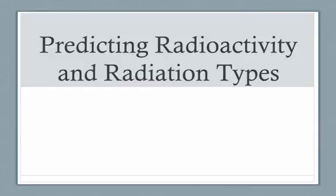In this video, we're going to discuss how to predict the radioactivity of a particular isotope and to determine what type of radiation it would give off. This is all going to be done using the graphs that we should have created in class of proton-to-neutron ratios for stable isotopes.